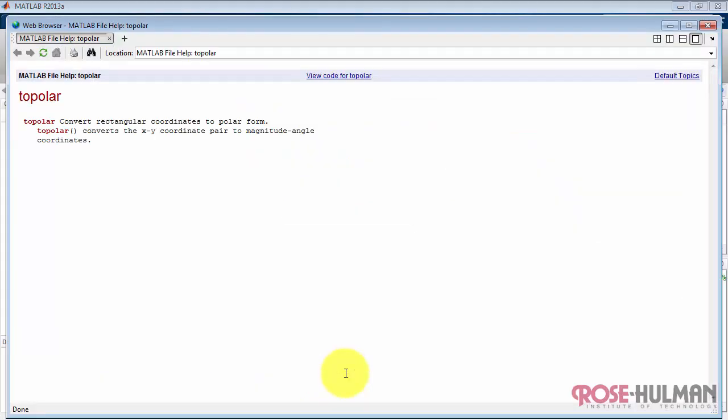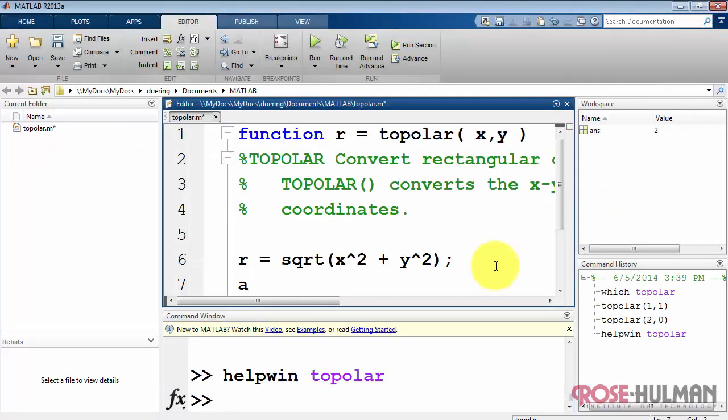Now, HelpWin toPolar looks like this. You'll notice that where I have been typing in all caps, that appears in the bold face and highlighted font.